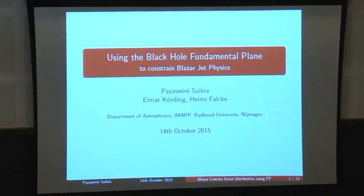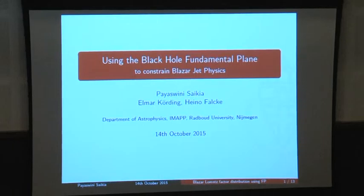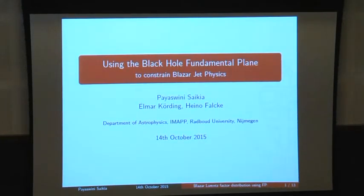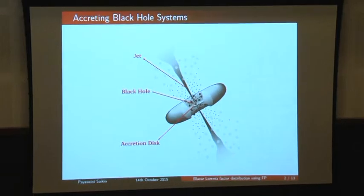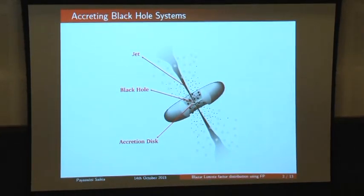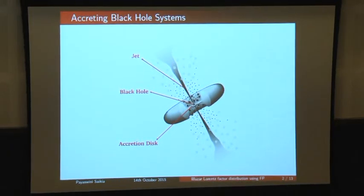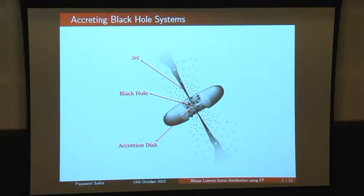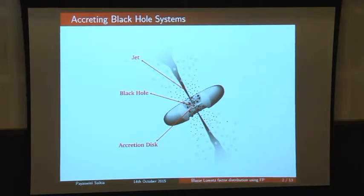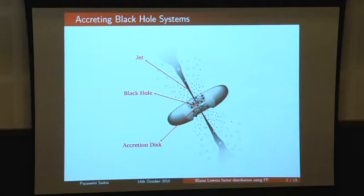Specifically, she will be talking about constraining the blazar Lorentz factor distribution. To start with, an introduction of the fundamental plane: in the universe we have black holes of a vast mass range, from stellar mass black holes to supermassive black holes hosted in active galactic nuclei. Despite many differences, the central regions are similar — a black hole, an accretion disk, and a relativistic jet. This raises the question: are AGN just scaled-up versions of galactic X-ray binaries?